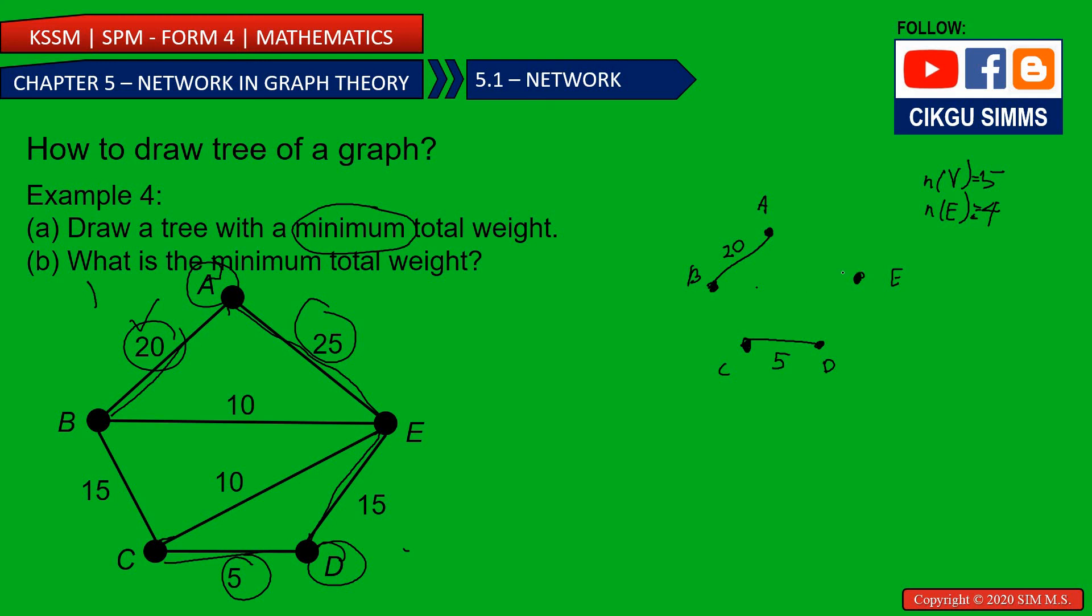How about E? E, we have 4 choices. 25 doesn't need because A is already connected. And then 10 and 10 and 15. So I better connect both the 10. So E, 10 and also the 10. I choose the lowest number. So this is the tree.